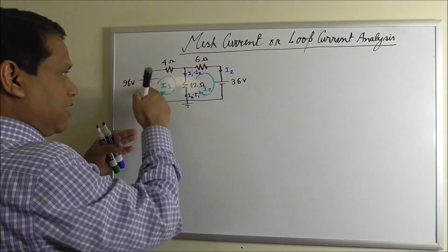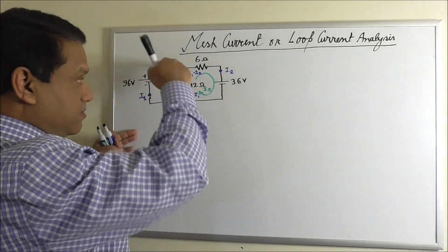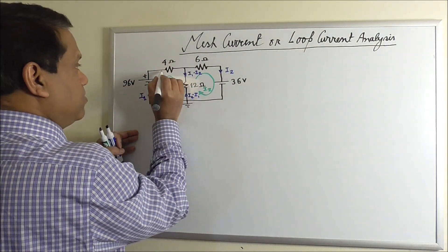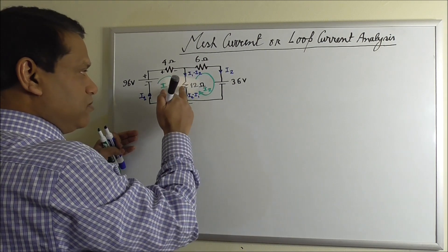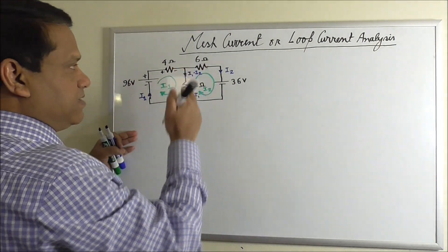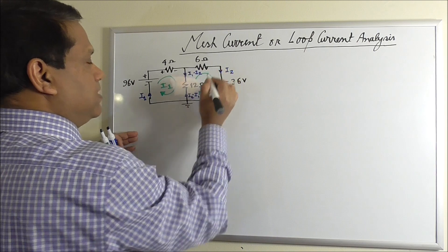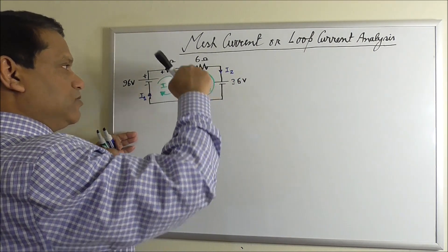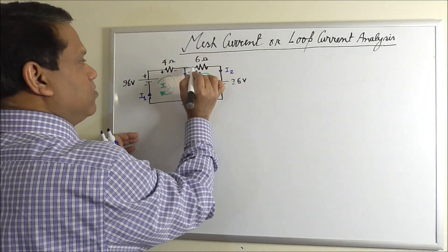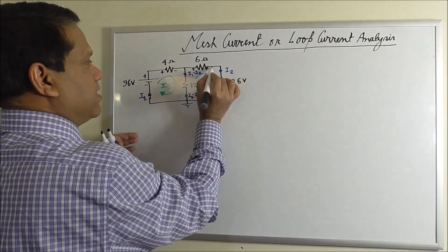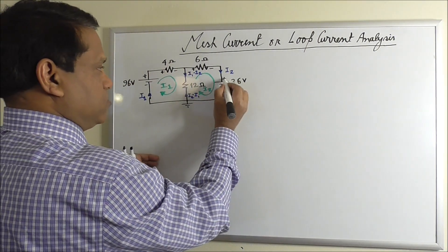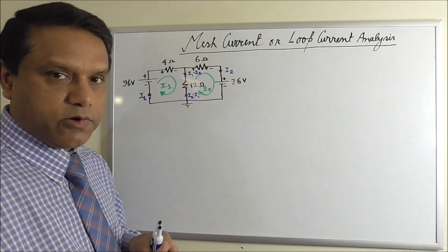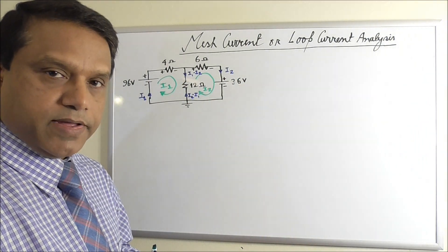And since the I1 current is this way clockwise, so we have to put plus here, minus here. I'm coming to this one a little later. Let's write this one first. Here, current I2 is this way, so plus will be at the bottom on the left side and minus on the right side. And this has to be as it is because we cannot change the polarity of a voltage source.